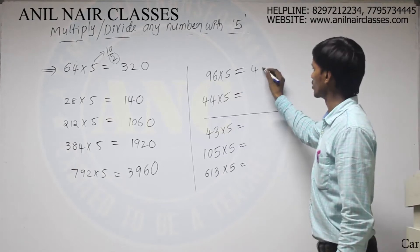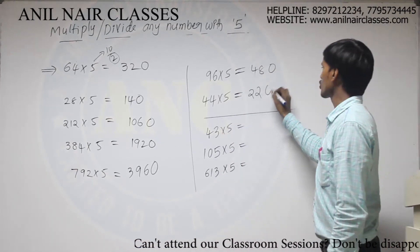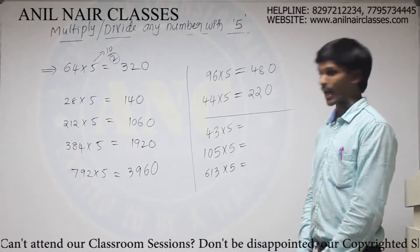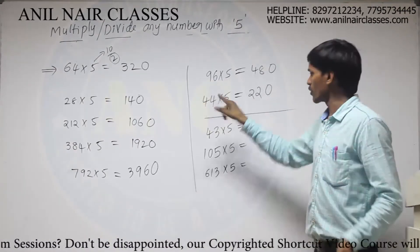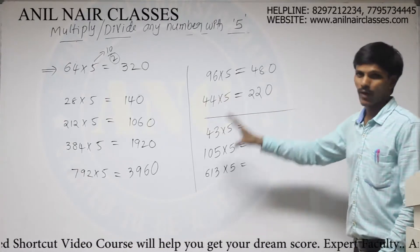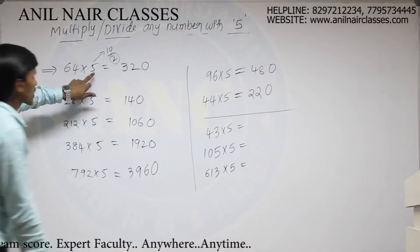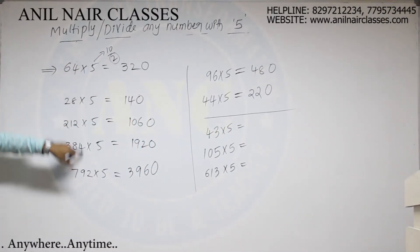Now count to this. 96, half value 48. Add 0. 44, half value 22. Add 0. So like this, without multiplying with 5, you can directly get the answer within a fraction of seconds. Now, till now we discuss multiplication of 5 with the even numbers only.